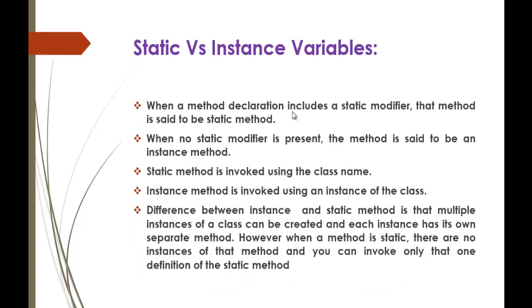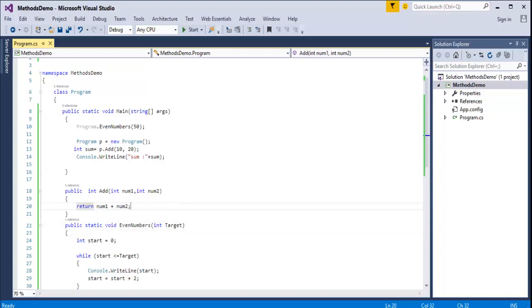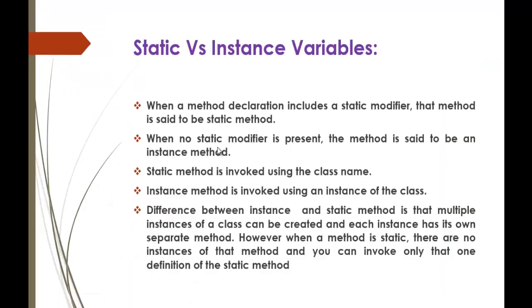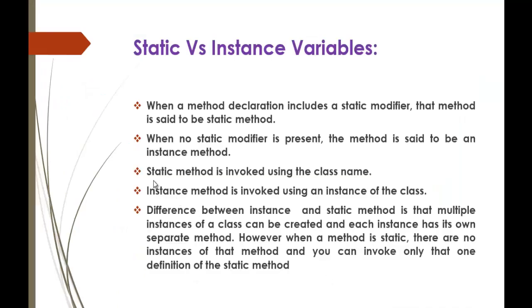Whenever you declare a method and that method includes the static modifier, that method is said to be a static method. When no static modifier is present, the method is said to be an instance method. For example, in the EvenNumbers method if you don't find any static keyword, that method is called an instance method. That is the difference between static and instance methods. A static method is invoked using the class name, and an instance method is invoked using an instance of the class — we created object P of class Program.